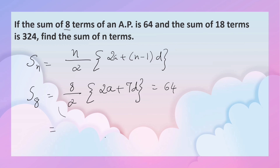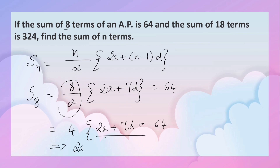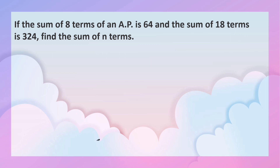Here 8 by 2 is 4, so 4 into 2A plus 7D equals 64. Transposing 4 to the other side, 2A plus 7D equals 64 by 4, that is equal to 16. So we have 2A plus 7D = 16. Let this be equation 1.